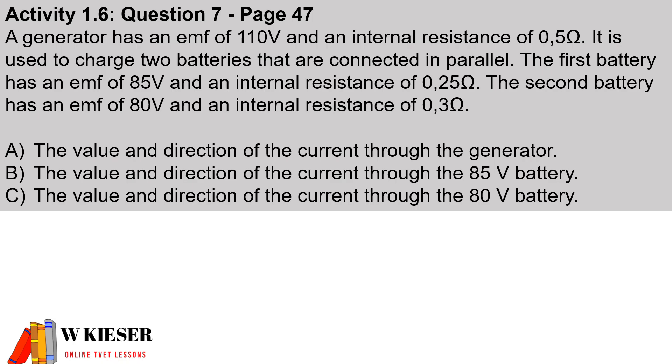This question taken from our textbook solving using Kirchhoff's law. A generator has an EMF of 110 volts and an internal resistance of 0.5 ohms. It is used to charge two batteries that are connected in parallel.